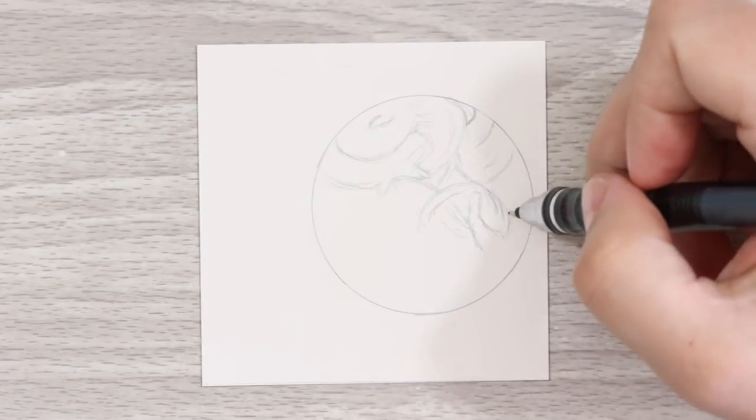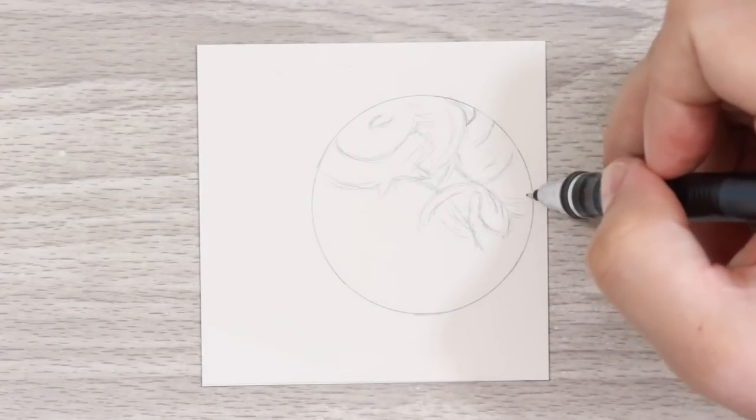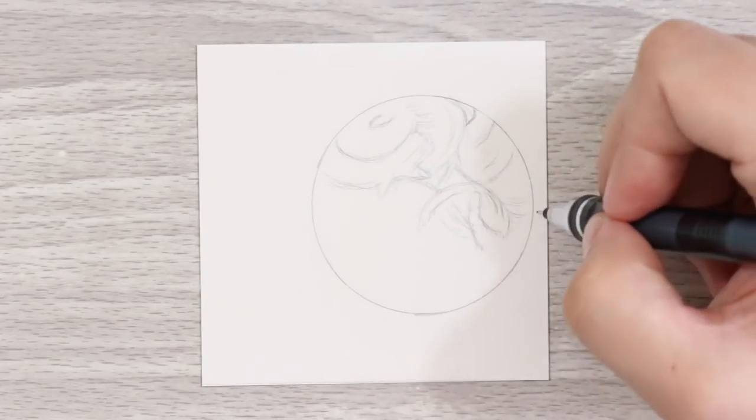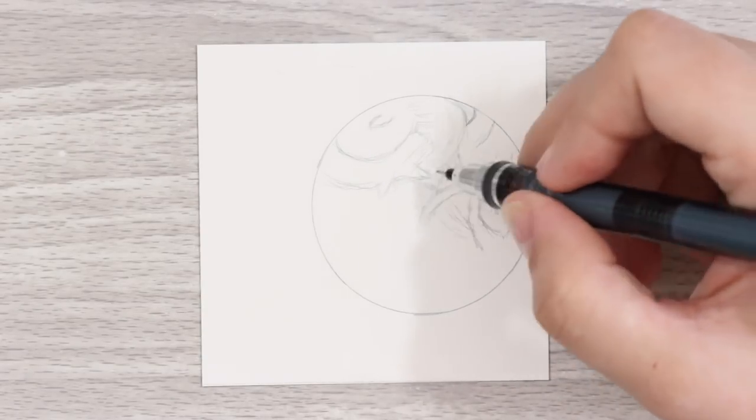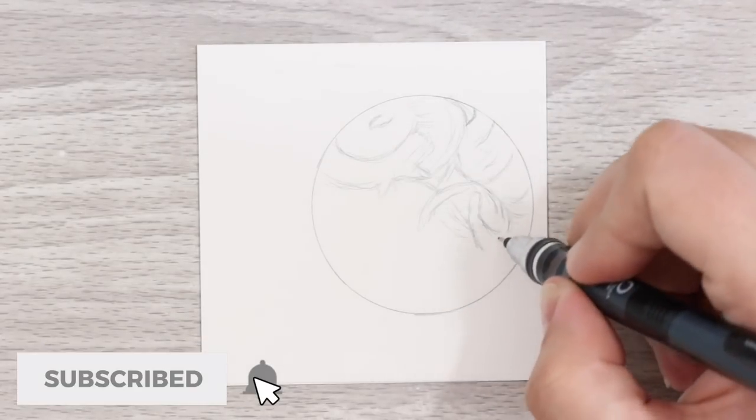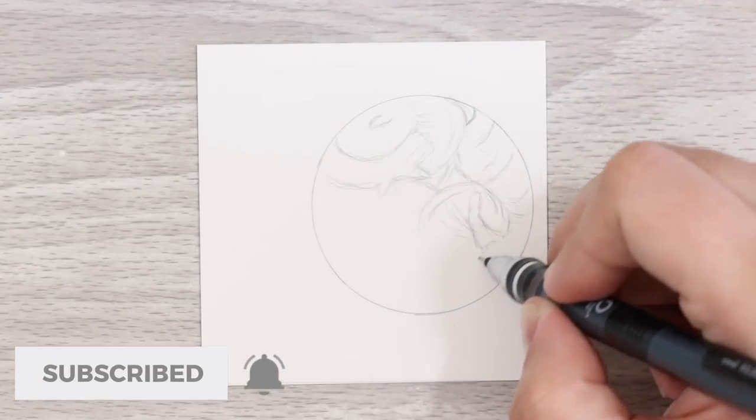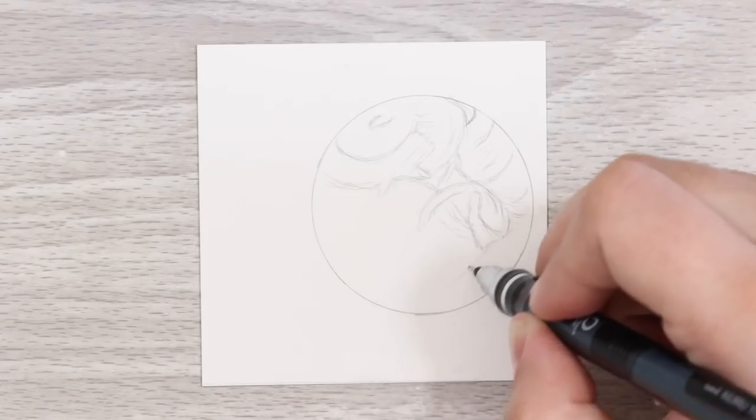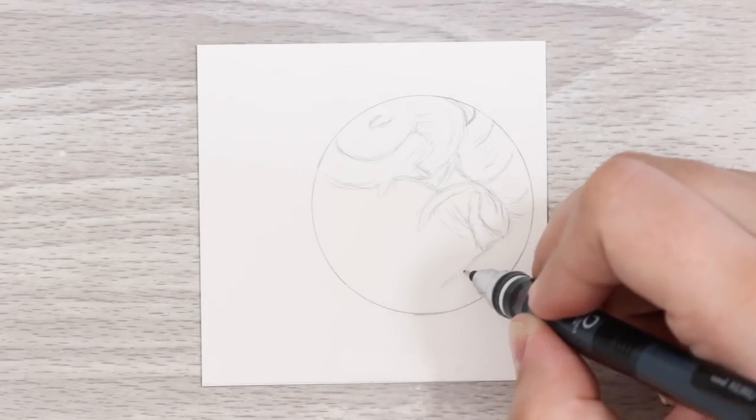First thing we need to do is map out all of the shapes and curls that we can see in the reference material with a graphite pencil. You want to look at the shapes the main light and dark areas are making, and you want to think of your fur in terms of clumps and not individual strands and it will be a whole lot easier.